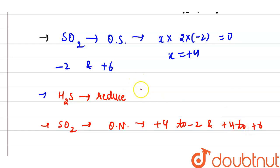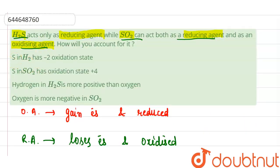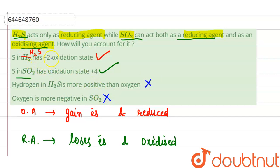So hydrogen sulfide acts only as a reducing agent, while sulfur dioxide can act as both. Let us evaluate the options one by one. Option one: sulfur in hydrogen sulfide has a -2 oxidation state — this is correct. Option two: sulfur in sulfur dioxide has an oxidation state of +4 — this is also correct. The statement that hydrogen in hydrogen sulfide is more positive than oxygen is not correct, and the statement about oxygen in sulfur dioxide is also not correct. Therefore, options one and two are the correct answers.